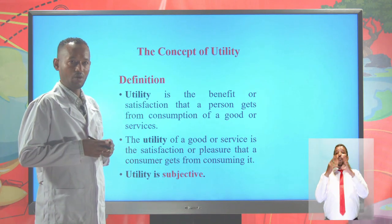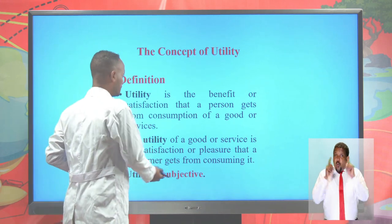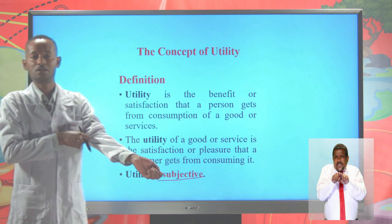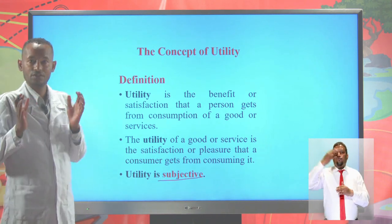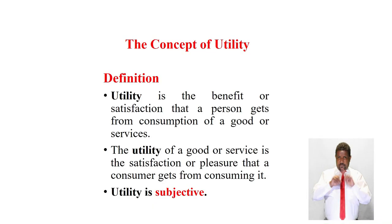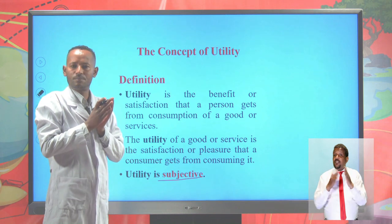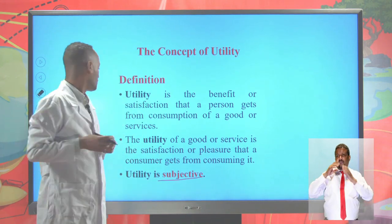From the definition of utility, utility is subjective. When we say utility is subjective, it means that two individuals get from the same commodity may not be the same. For example, somebody may get a higher level of satisfaction from consumption of cigarettes, but somebody else may not get any satisfaction from the same cigarettes. So utility is subjective — it is dependent on the perception or attitude of individuals.